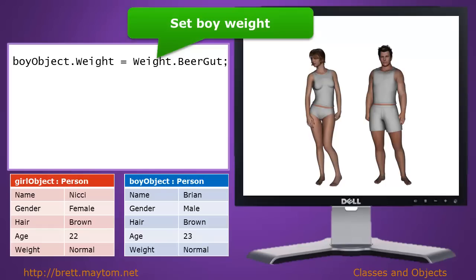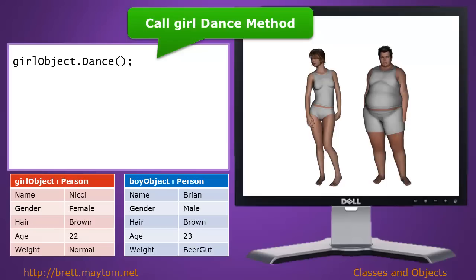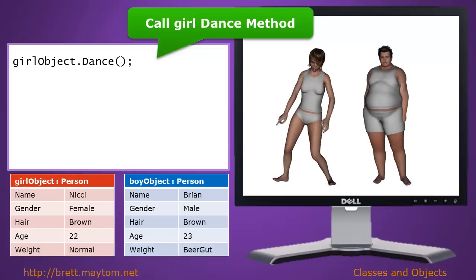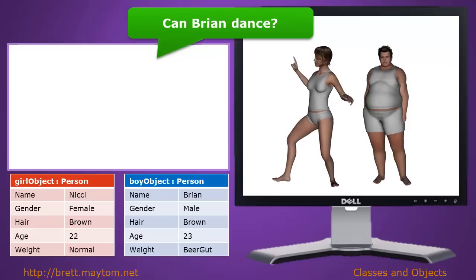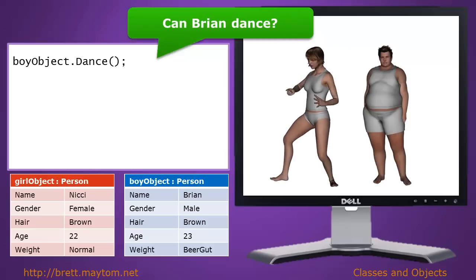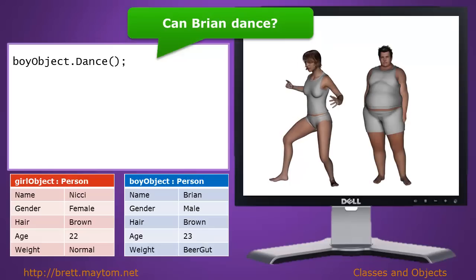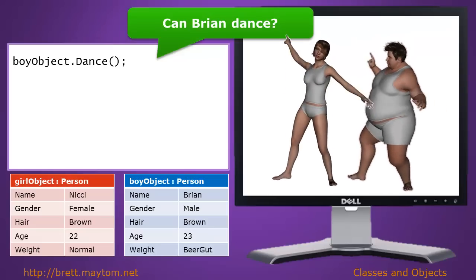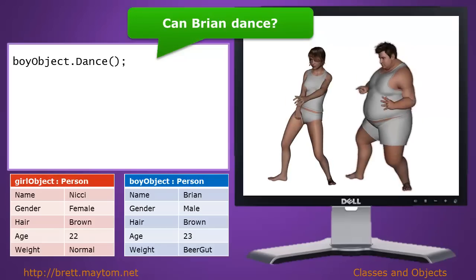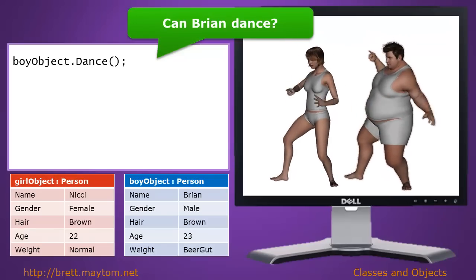Setting the boy object's weight to beer gut and executing it changes only that object. Next, we execute the dance method on the girl object — when executed, the animation starts playing. The big question is: can Brian dance? Boy object dot dance — yes, Brian shares the same dance code. The objects are different, but the dance code can be applied and executed on either object.